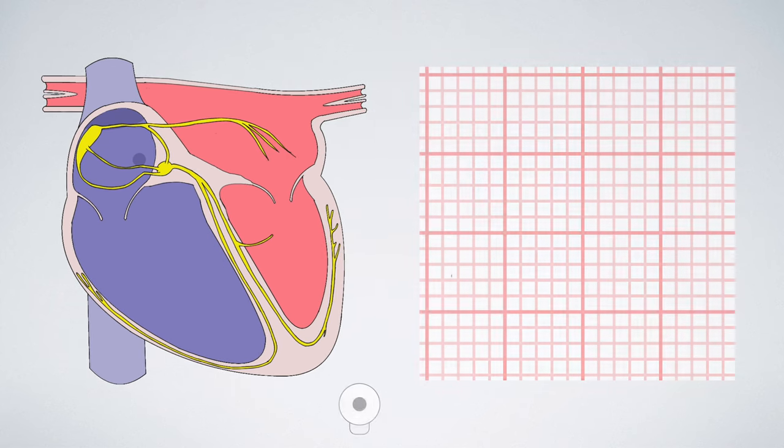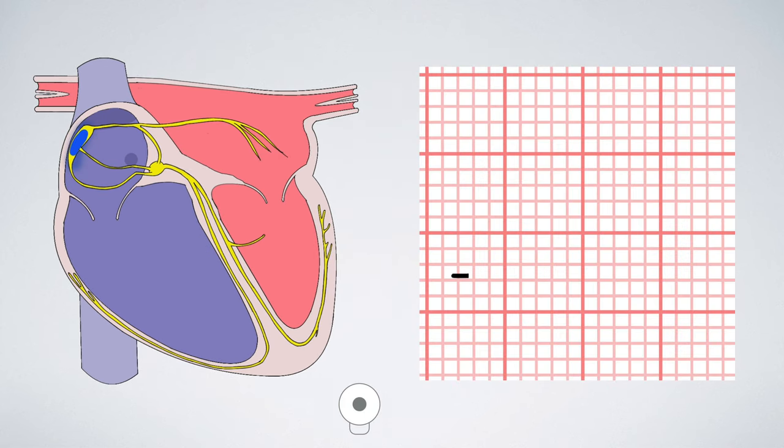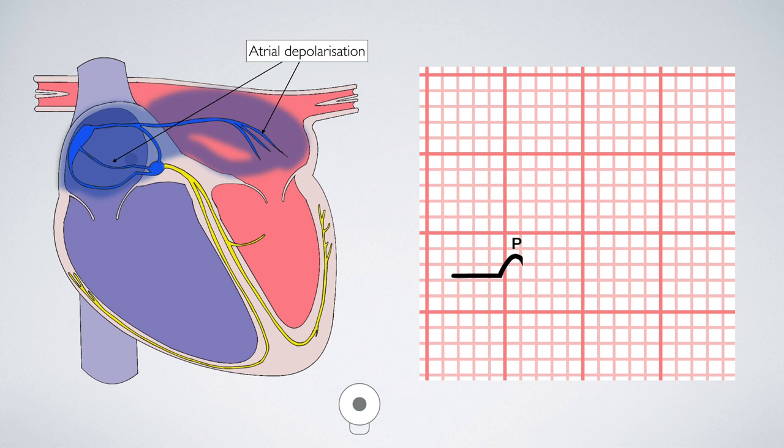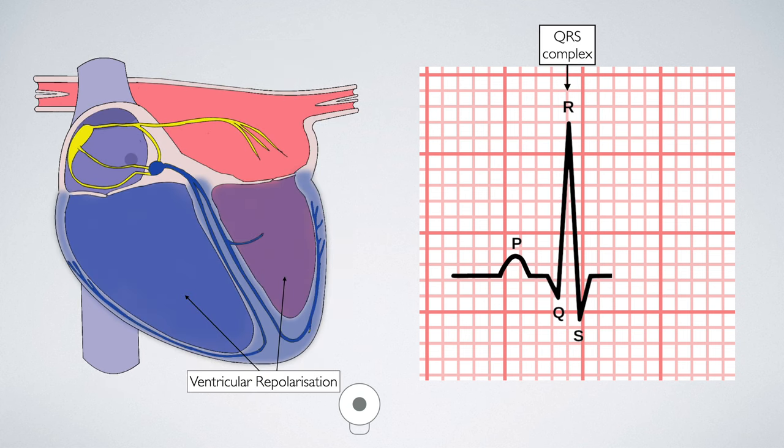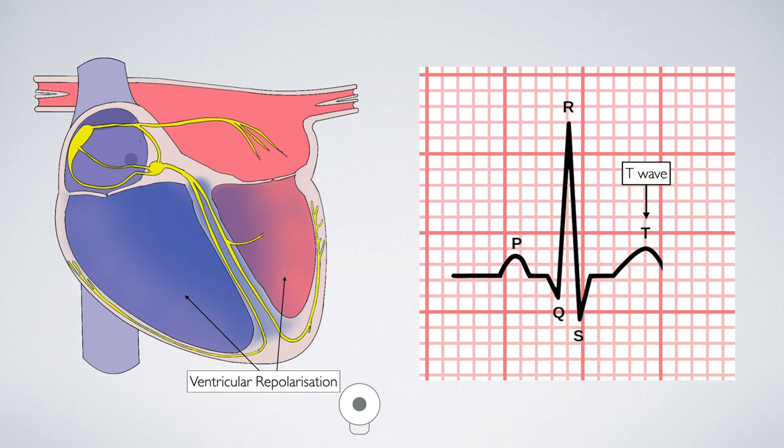This orchestration produces distinct waves on our ECG trace: the P waves, QRS complex, and the T waves.